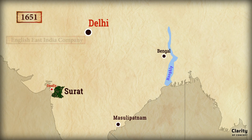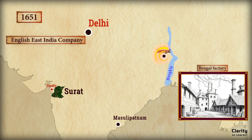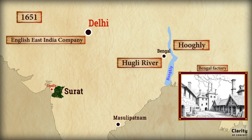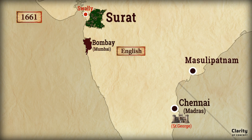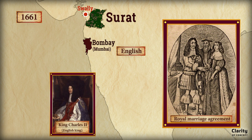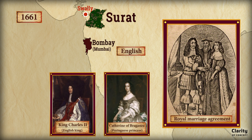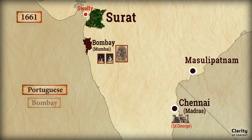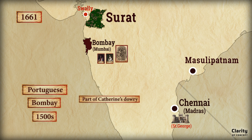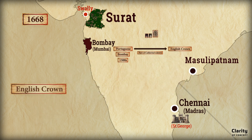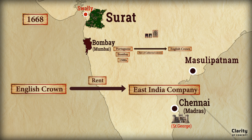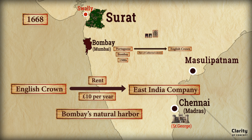In 1651, the English East India Company set up its factory in Bengal at Hooghly along the Hooghly River, their initial entry into Bengal. A significant event occurred in 1661 when the island of Bombay was handed over to the English as part of a royal marriage agreement between King Charles II of England and Catherine of Braganza, a Portuguese princess. In 1668, the English Crown leased Bombay to the East India Company for a nominal rent of £10 per year, and the company quickly developed its natural harbour into a key trading port.